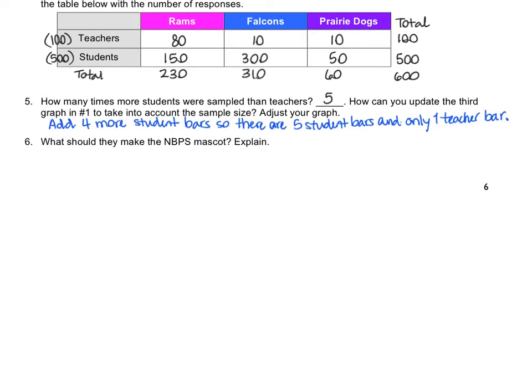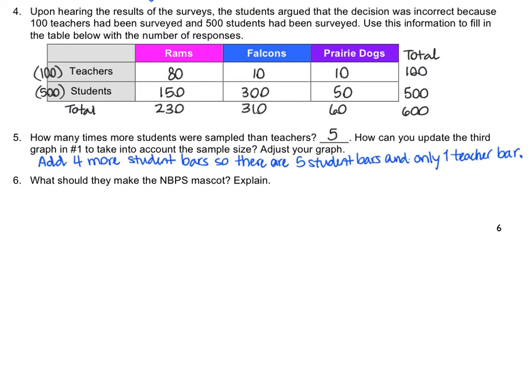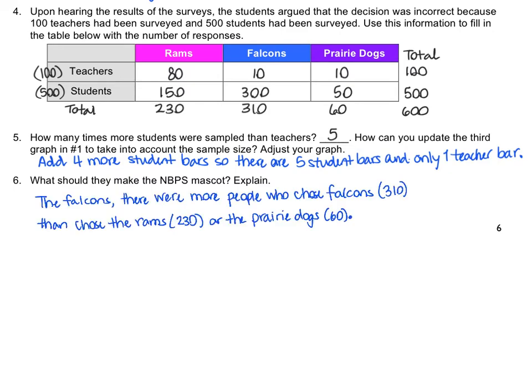Question number six asks, what should they make the mascot and explain? When we look back at our mosaic plot, we see that a much higher proportion — a much greater area of the combined mosaic plot — is blue, which represents the falcons, instead of pink, which represents the rams. This makes sense and is shown in our two-way table when we see the total number of people, teachers and students combined, was the highest for the falcons. So the falcons should be chosen as the mascot, and this is demonstrated by the greater area on the mosaic plot.